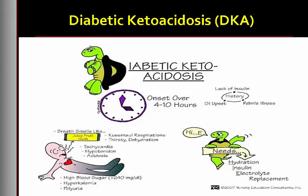Diabetic ketoacidosis is caused by a profound deficiency of insulin and is characterized by hyperglycemia, ketosis, acidosis, and dehydration. It is most likely to occur in people with type 1 diabetes, but may be seen in people with type 2 diabetes in conditions of severe illness or stress when the pancreas cannot meet the extra demand for insulin.